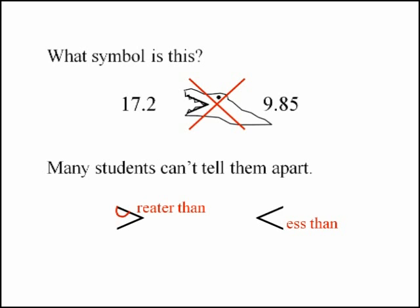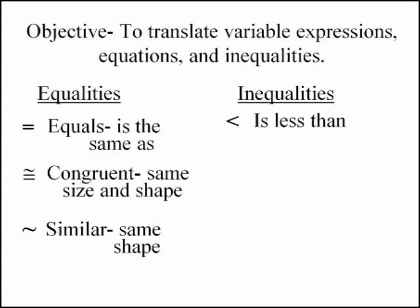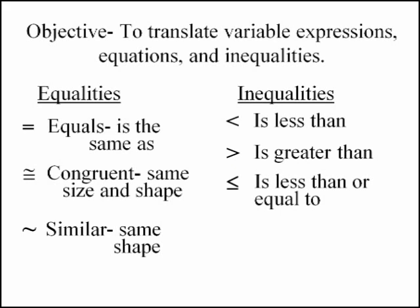Now you can just look at the symbol and tell what its meaning is. Is less than. And if we flip that around, we get is greater than. If we put a line under it, it's is less than or equal to. And of course, if you flip that one around, you get is greater than or equal to.